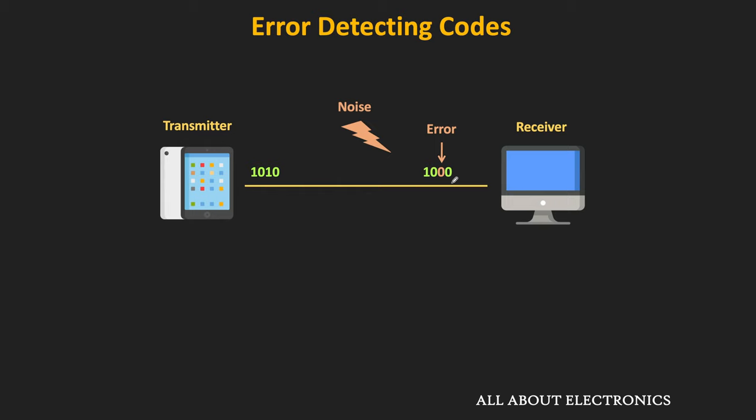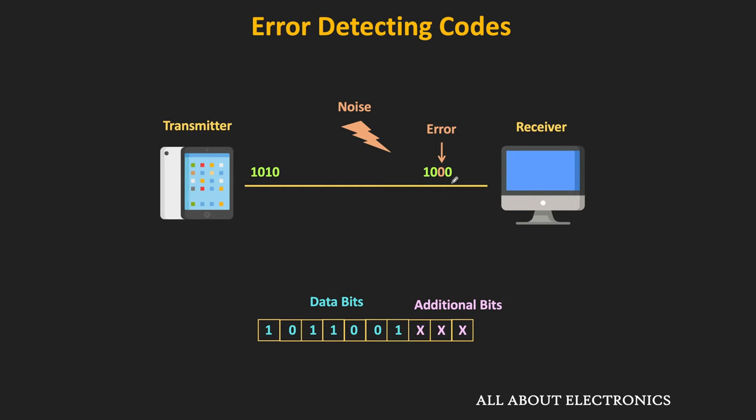To detect such errors, some additional bits are also sent along with the data bits. With the help of these additional bits, it is possible to detect the error in the received data. The value of these additional bits depends on the data bits as well as the type of error detecting code used during the transmission. With the help of these error detecting codes, it is possible to detect the error in the received data.